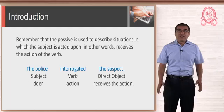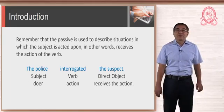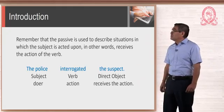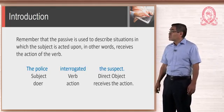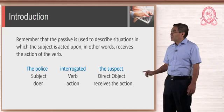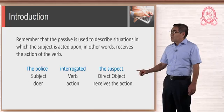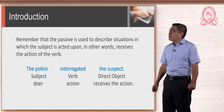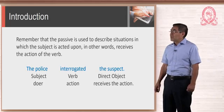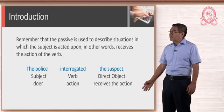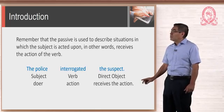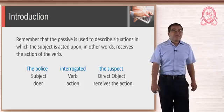Before we get into the core of our topic, let us remember a little bit about passive voice. Remember that the passive is used to describe situations in which the subject is acted upon — in other words, receives the action of the verb. Look at this sentence: 'The police interrogated the suspect.' You have the subject, then the verb 'interrogated,' and then the direct object. In the active voice, the subject is the doer, and then you have the direct object which receives the action.